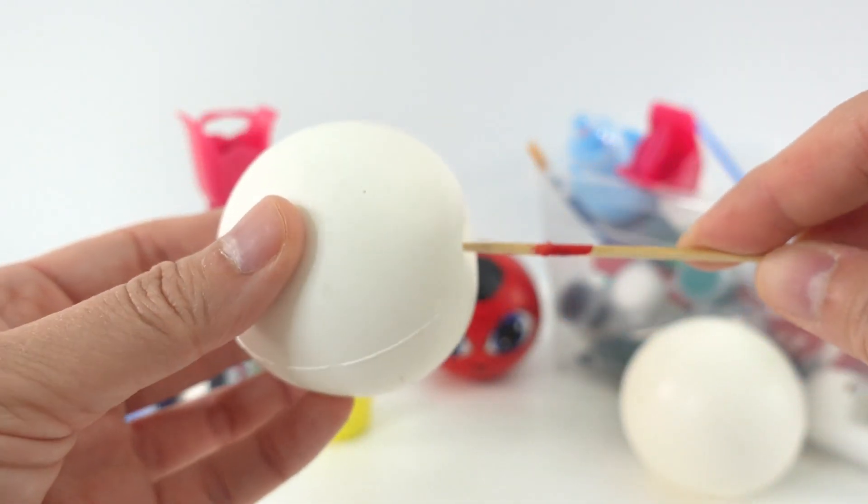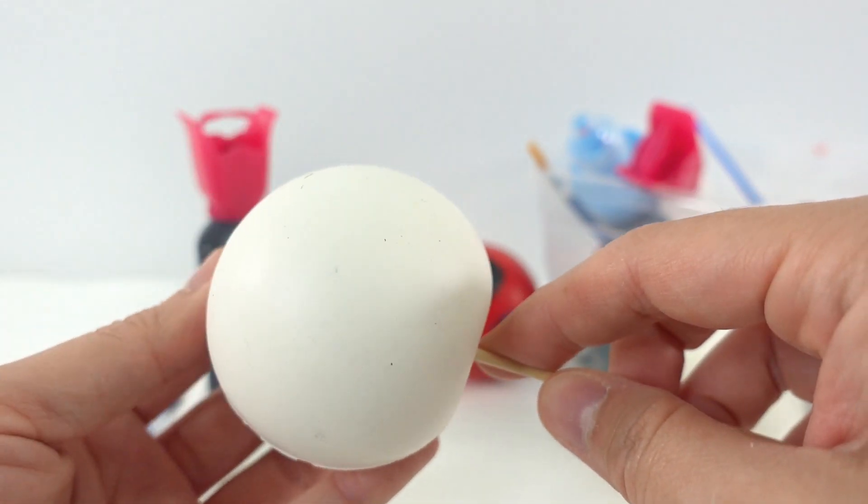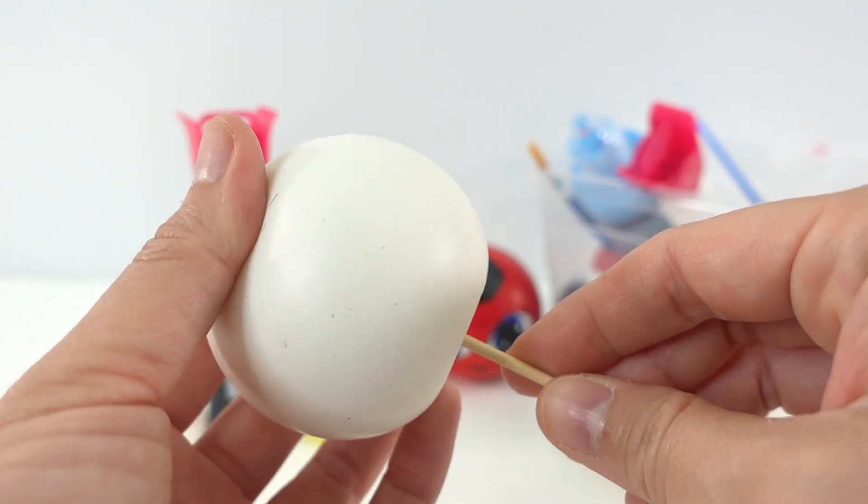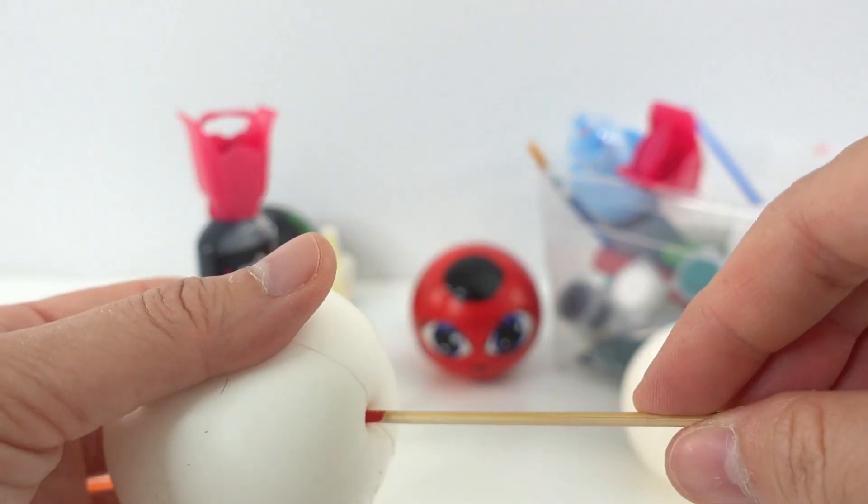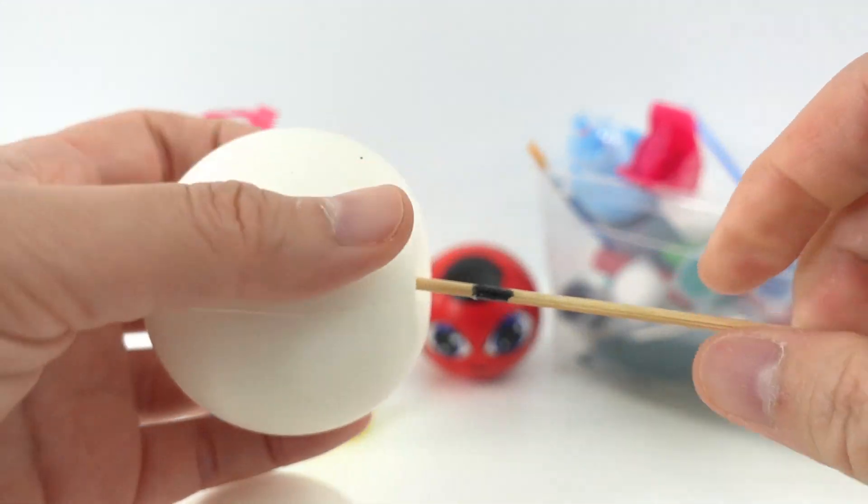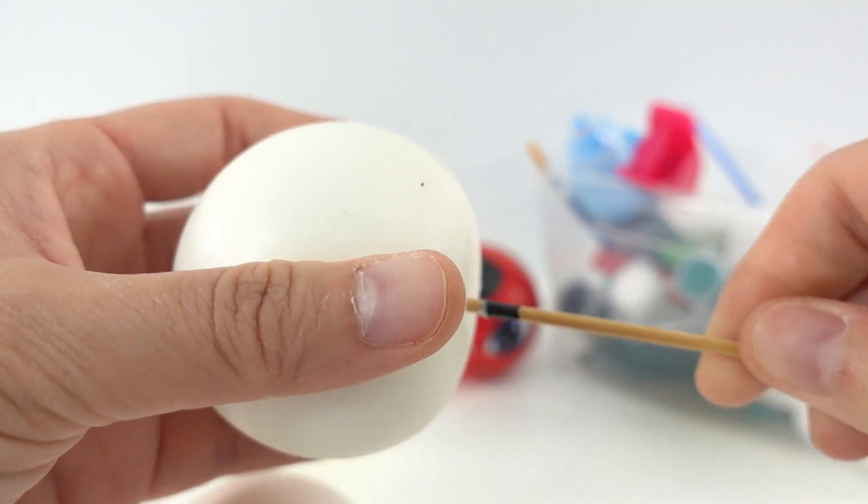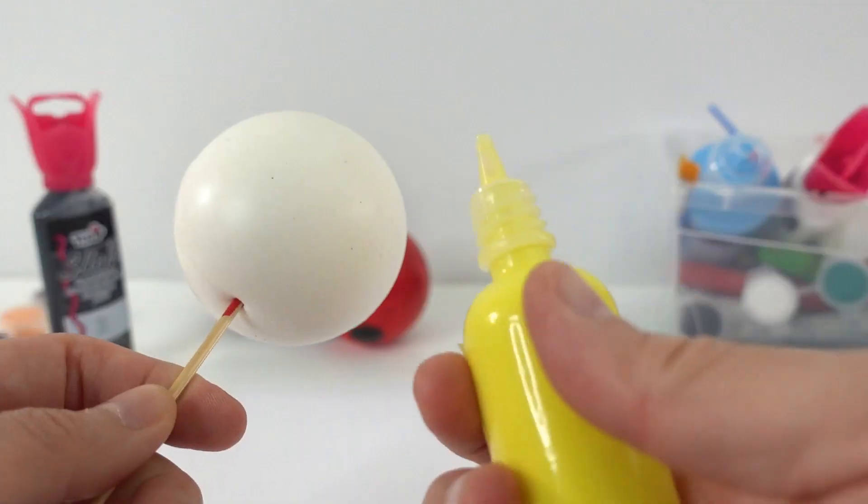The first thing I want to do is put these skewers into the ball. This makes it really easy to paint. Just going to stab it through - be very very careful so I don't go all the way through and stab yourself. You should actually not have your hands on the other side. It's nice and secure. Let's do the other one too. The reason why I like to do two balls at the same time is that while one is drying you can paint the other one.